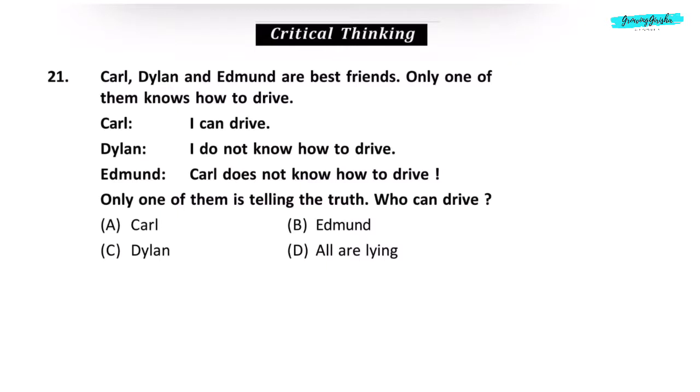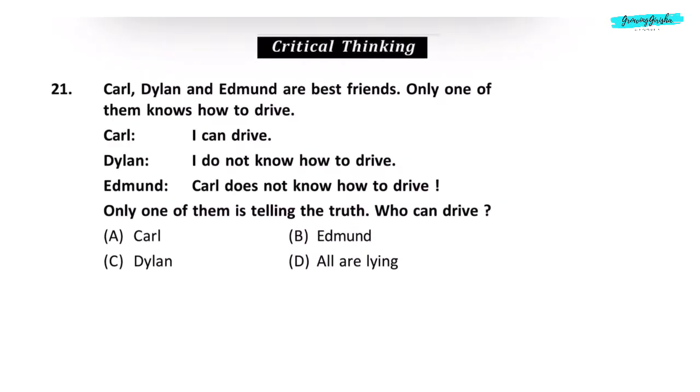Critical thinking. Question 21. Carl, Dylan and Edmund are best friends. Only one of them knows how to drive. Carl says I can drive. Dylan says I do not know how to drive. Edmund says Carl does not know how to drive. Only one of them is telling the truth. Who can drive? If Carl is true, others must be false. It means Dylan also knows how to drive. But it goes against the fact that only one of them can drive. He is lying.